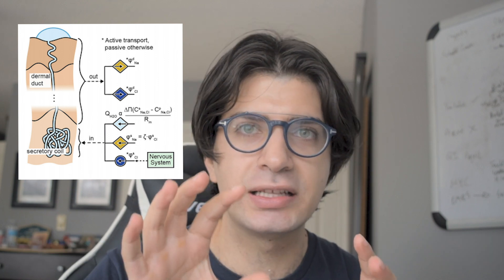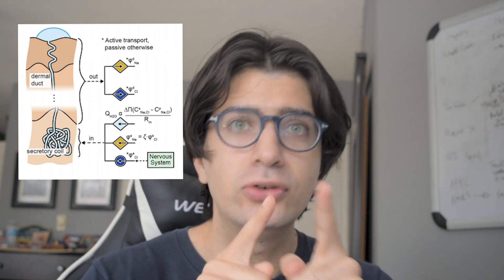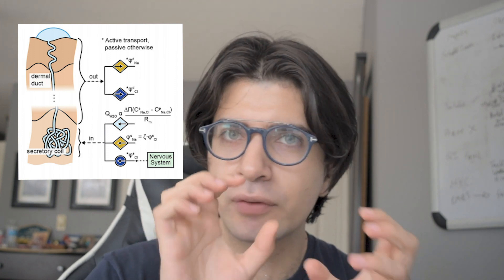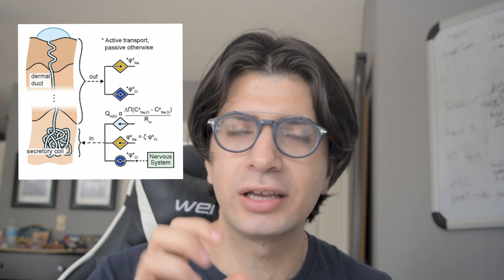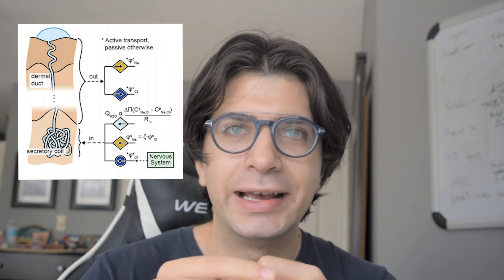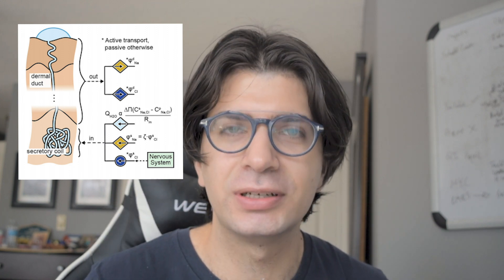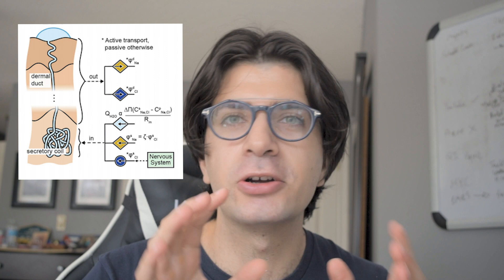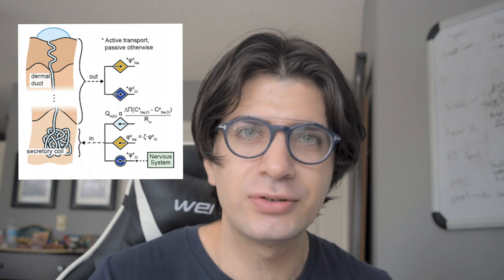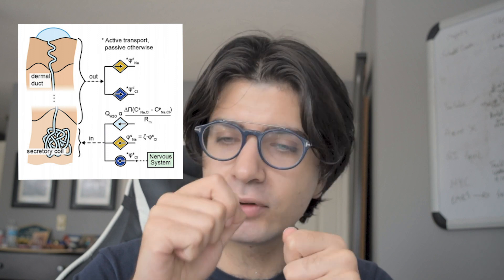When the sweat glands receive the acetylcholine, they start pumping out chloride ions into the lumen of the sweat gland. The second step is a reverse Uno situation, where sodium and potassium are swapping around through some transporters. I'll put a link in the description with information about ion transport and transporters. As this swap is happening, you still have chloride going into the lumen.